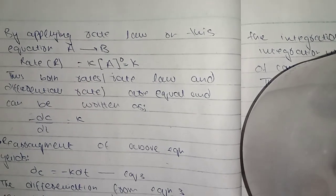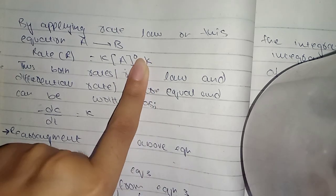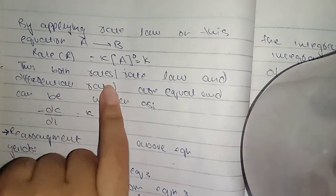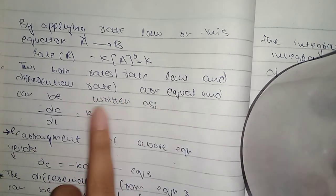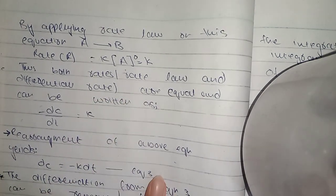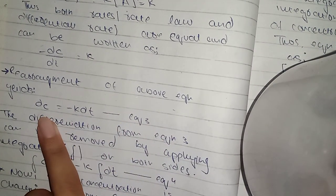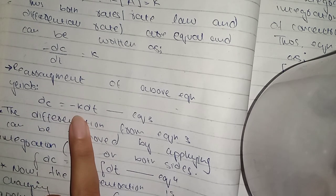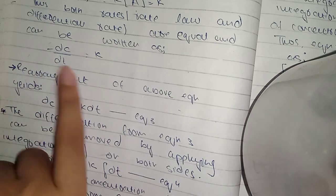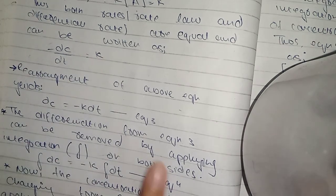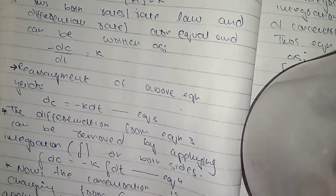We apply the rate law. The rate depends on concentration to the power zero, so it equals the rate constant K. Both the rate law and differential rate equation are equal and can be written as: -dC/dT = K. We rearrange it by multiplying DT across, so dC = -K dT. The minus sign goes with it, and we remove the differential form by taking integration on both sides.